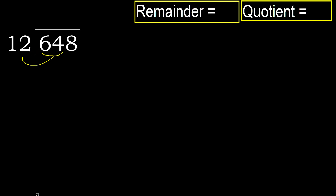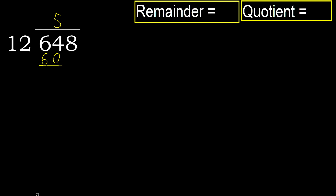64 is not less, therefore we work with 64. 12 multiplied by which number is nearest to 64 but not greater? 12 multiplied by 6 is 72, which is greater. Multiplied by 5, 60 is not greater. Subtract: 64 minus 60 is 4. Next.